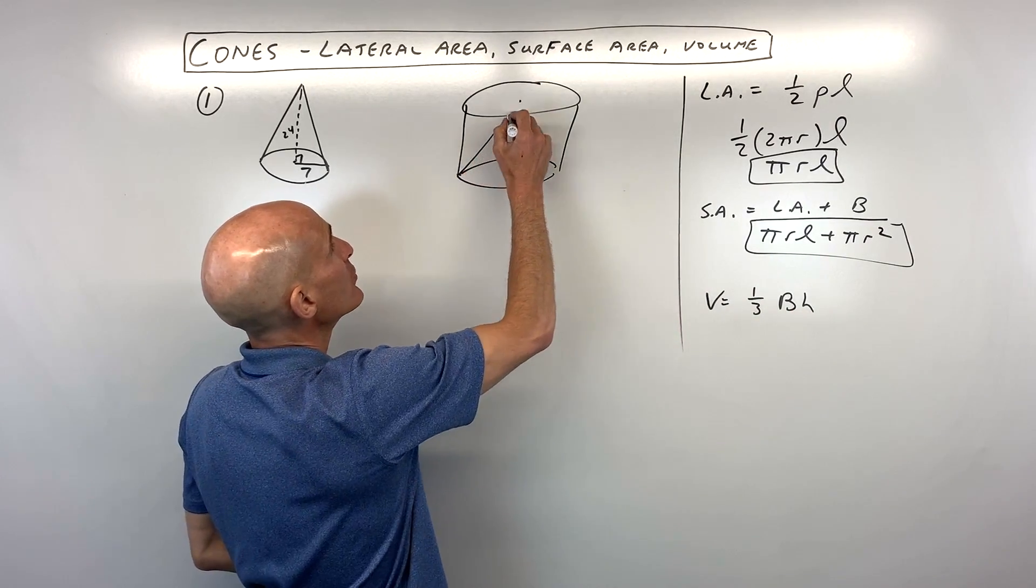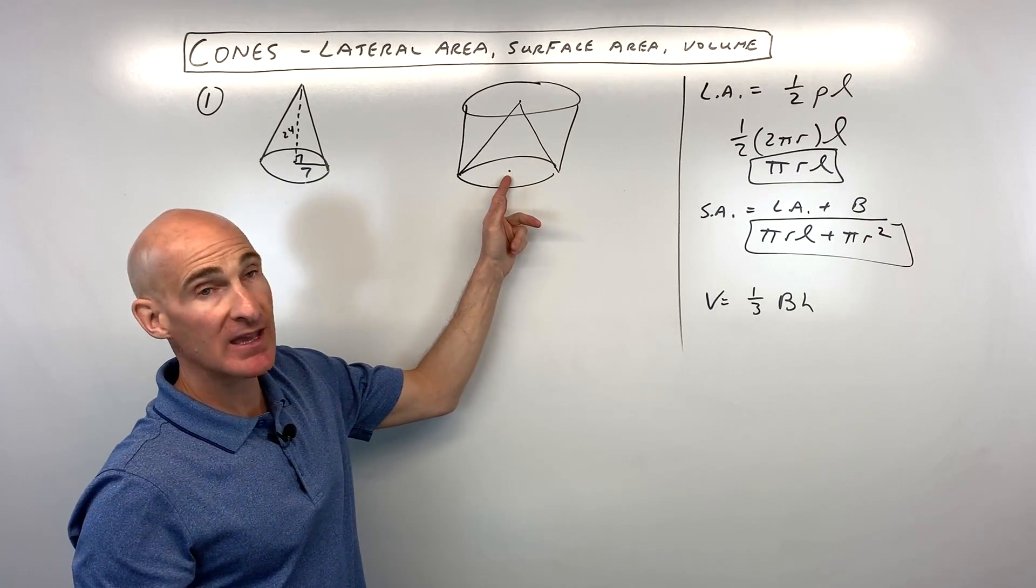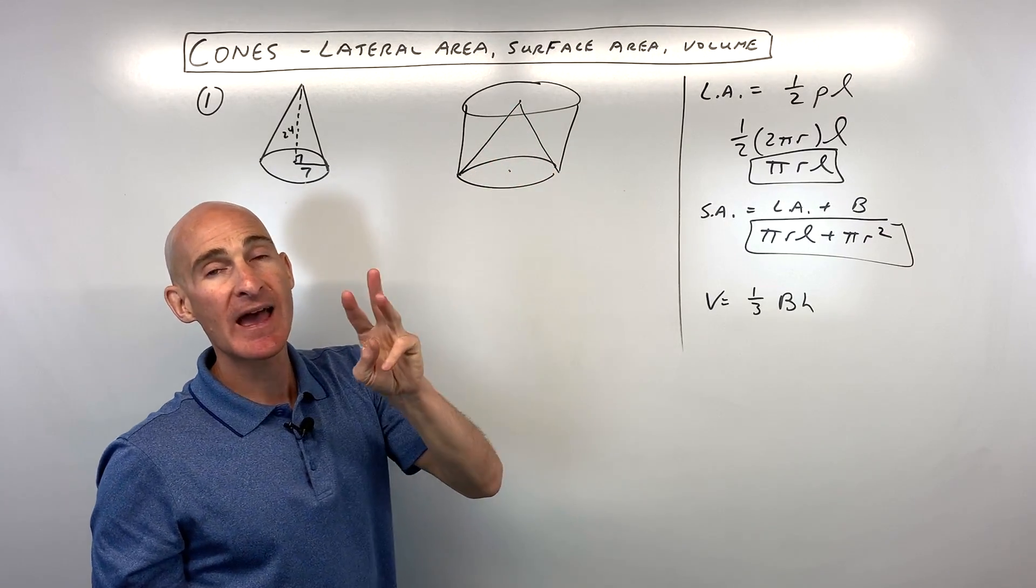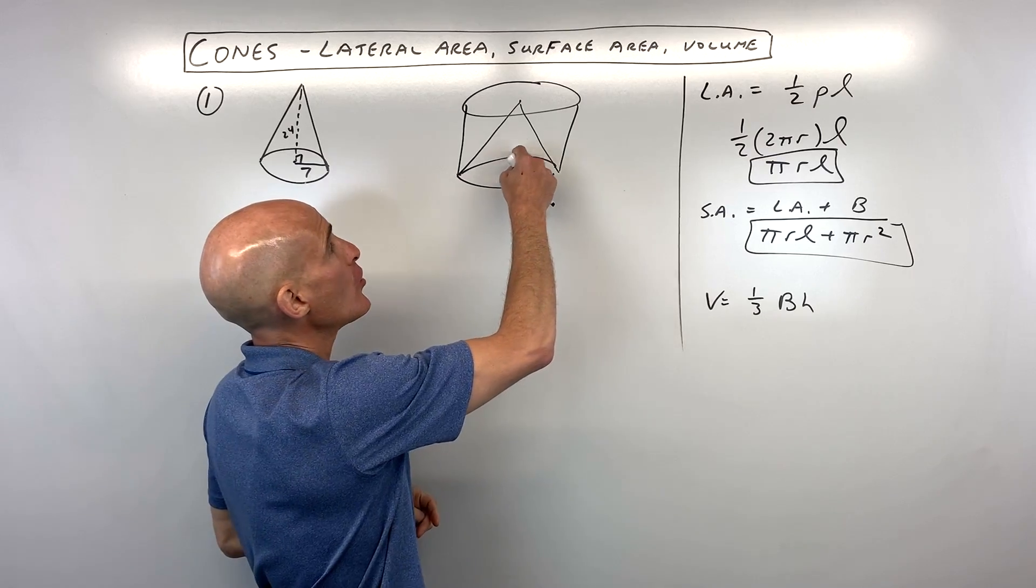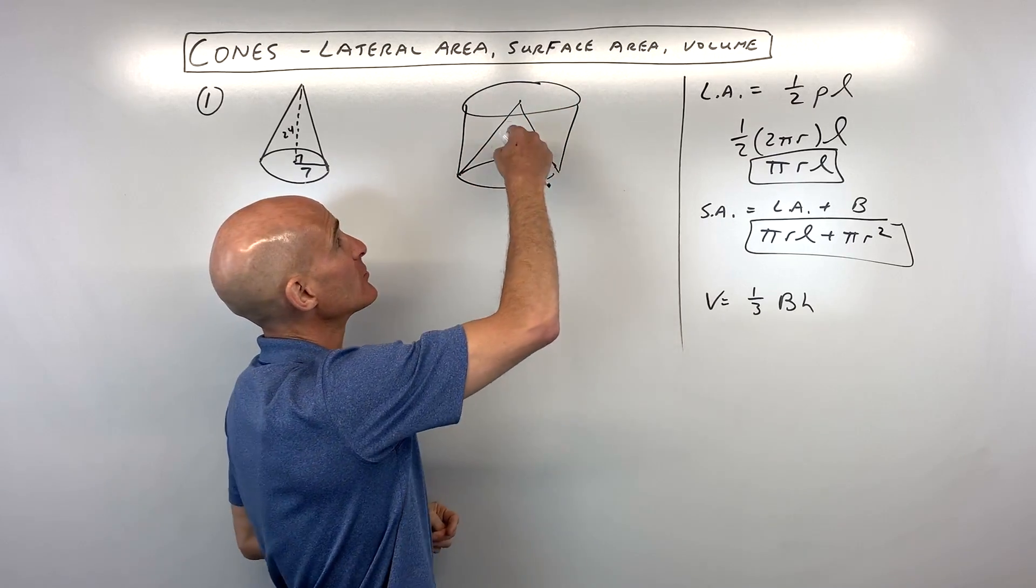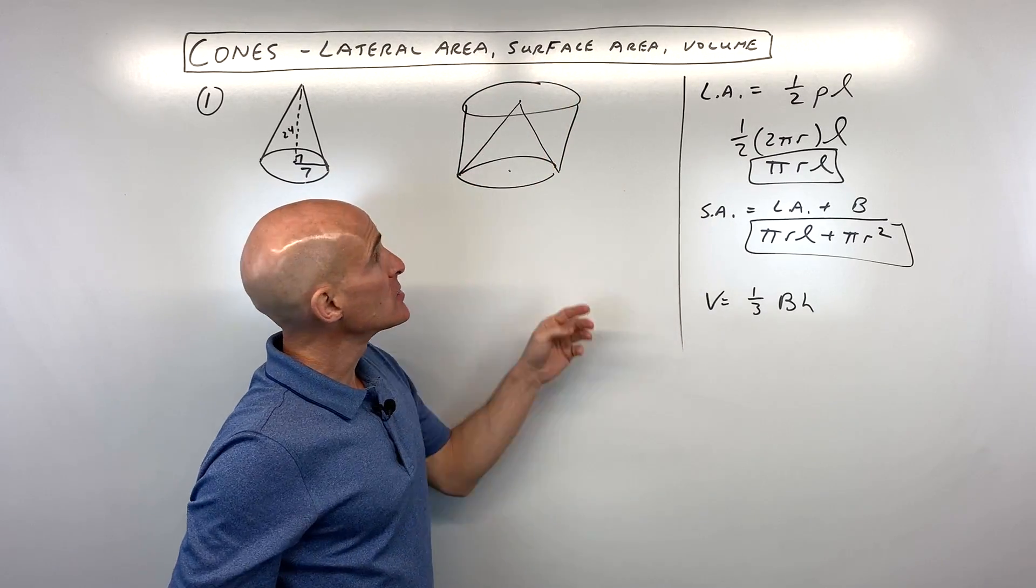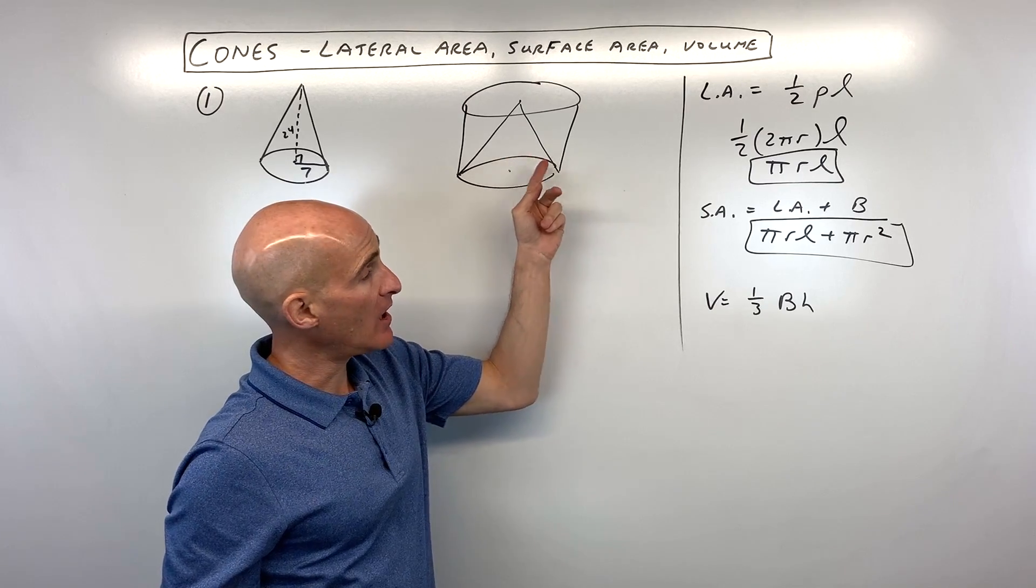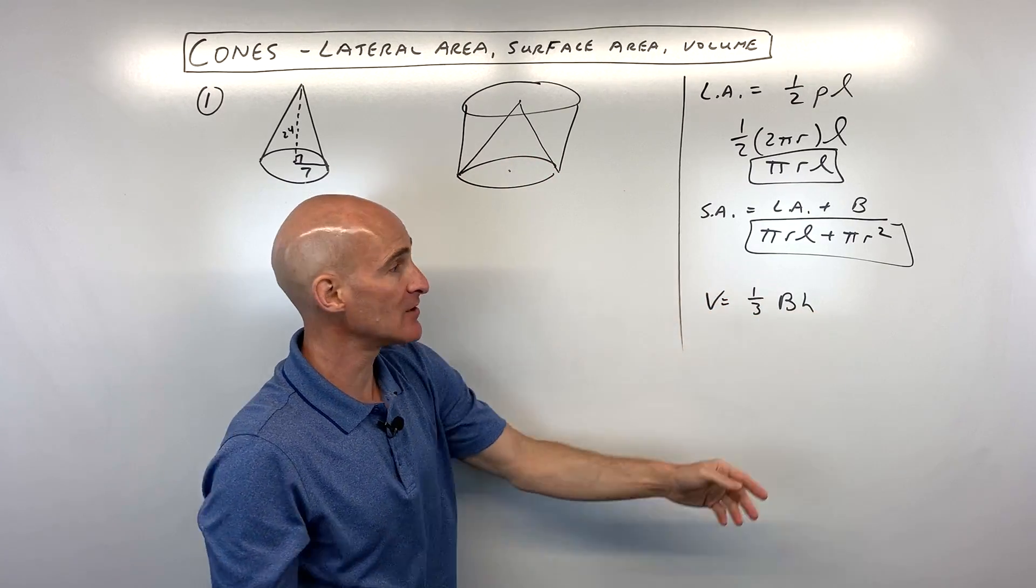But imagine if you put a cone inside of that cylinder with the same base and the same height. You could actually fit three of these cones inside of this cylinder. This one plus two more. So really, this one cone on its own is only taking up a third of the volume of the cylinder.